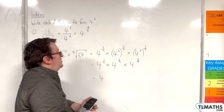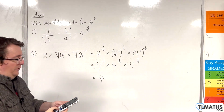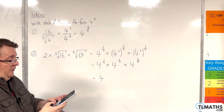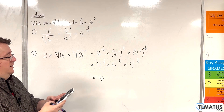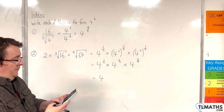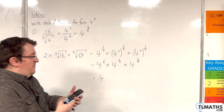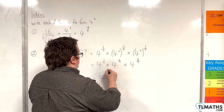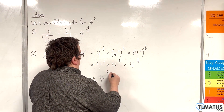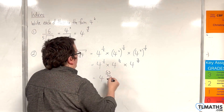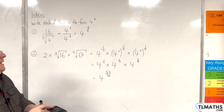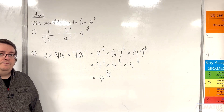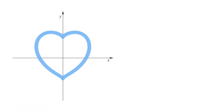So, here we can just add the indices. We've got 1 half, plus 2 thirds, plus 3 fifths. And we get 53 over 30. So, 4 to the power of 53 over 30 is our answer to number 2.